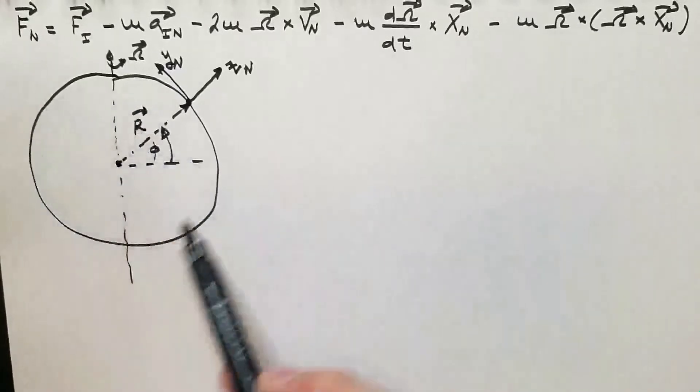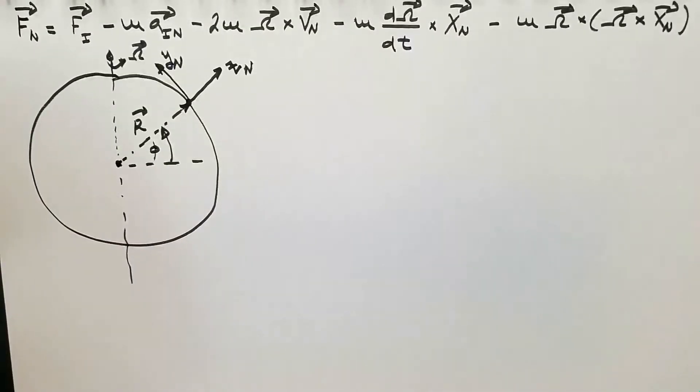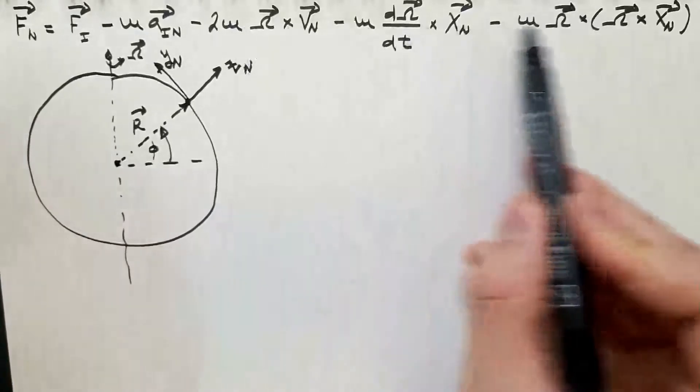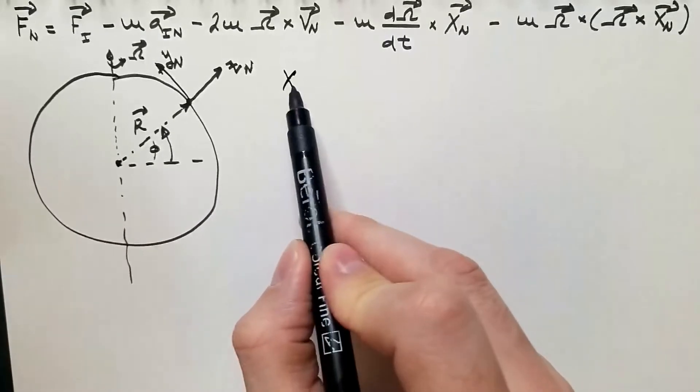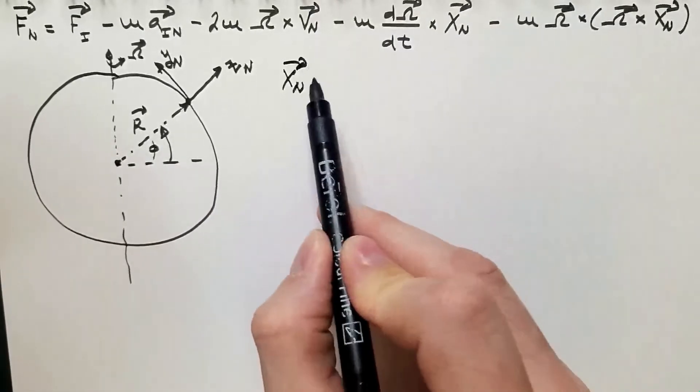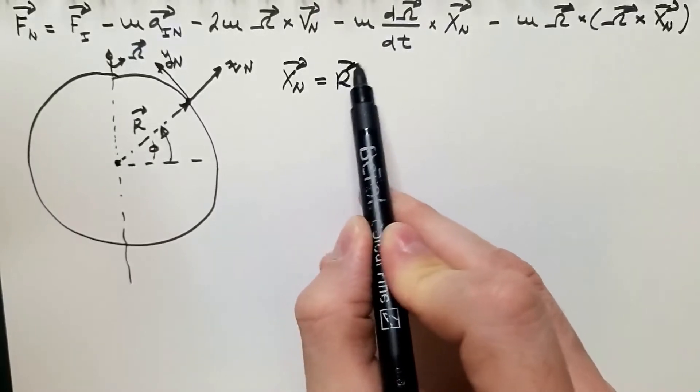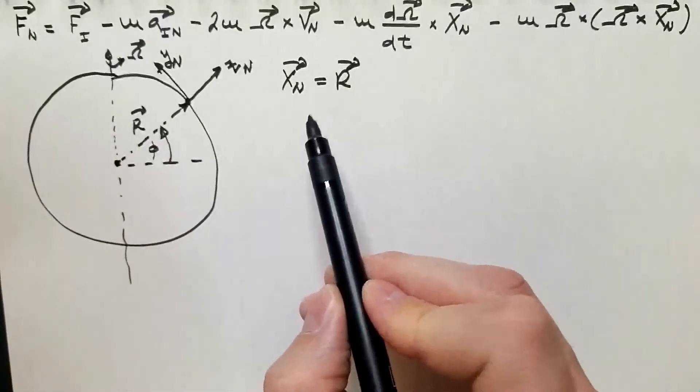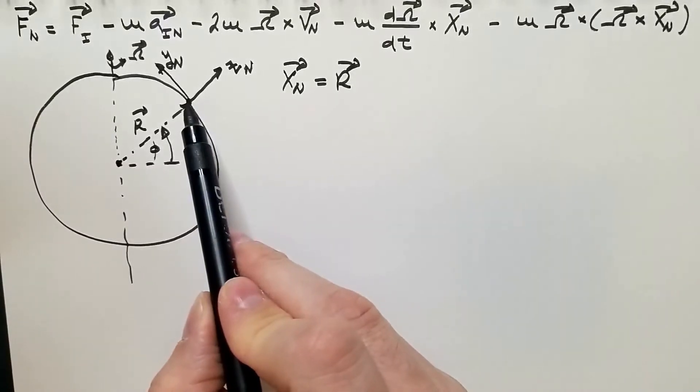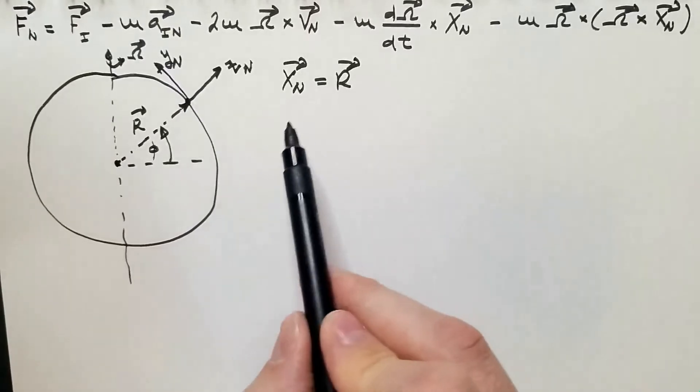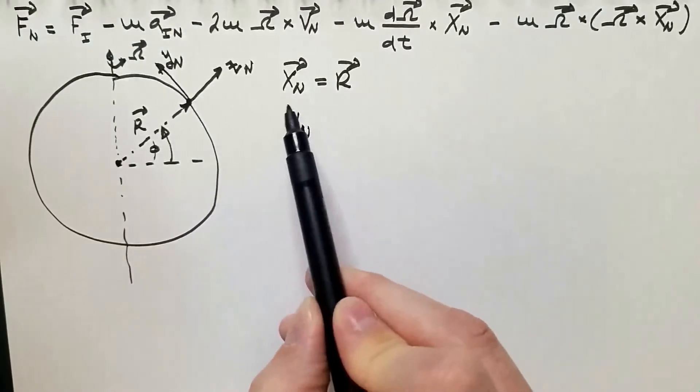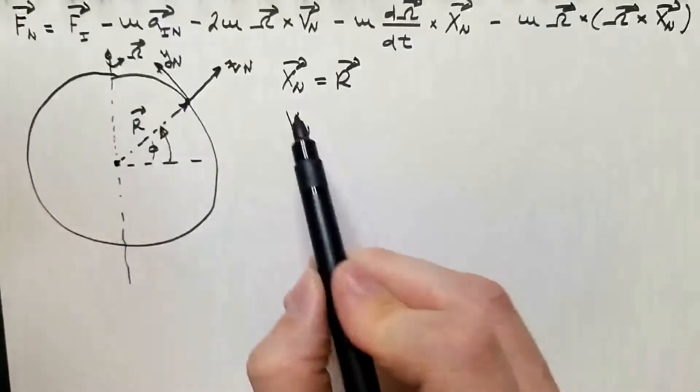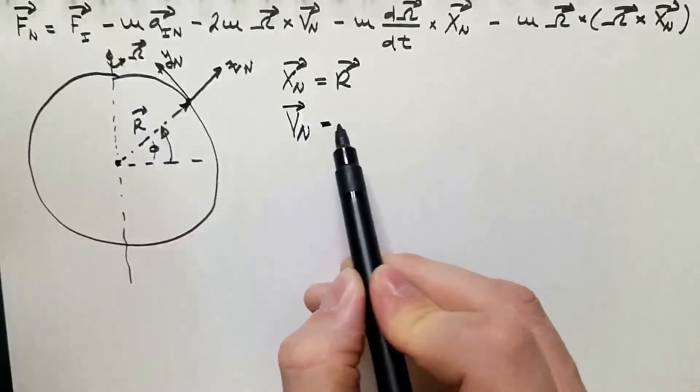Now, when we cast the problem in this form, we immediately see that in the above equation, x_n is actually radius vector r. We also assume that this point is fixed on the surface of the Earth and it is not moving relative to the Earth, which means that v_n is also zero.